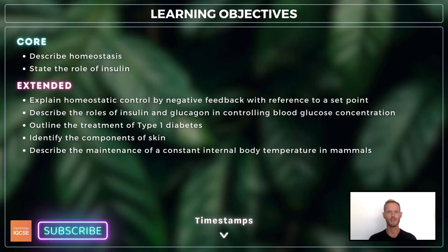For extended, you also need to describe the term negative feedback, describe the control of blood glucose concentration, outline the treatment of type 1 diabetes, identify the components of skin, and describe how mammals maintain a constant internal body temperature.